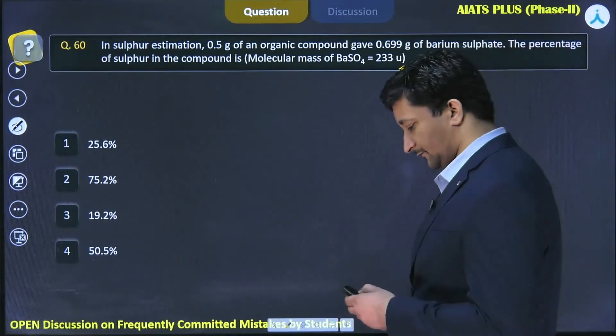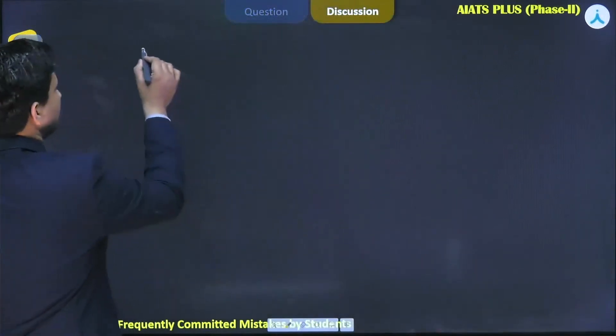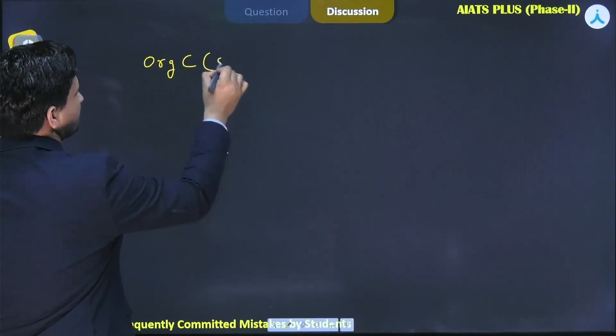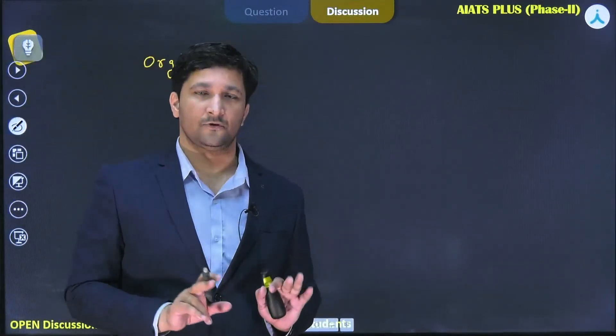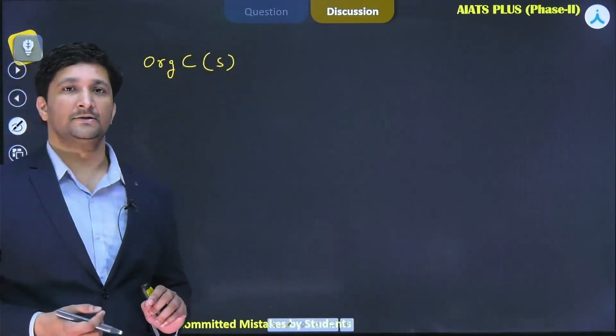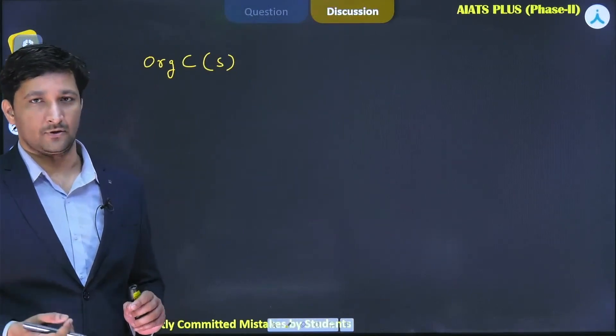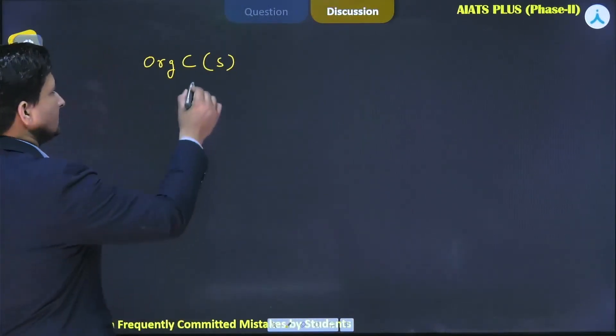Let me discuss that process. Suppose we take an organic compound which contains sulfur - any organic compound which contains sulfur. First, in a Carius tube, we take this compound and it is treated with sodium peroxide or fuming HNO3. When it is heated with them, the sulfur will convert.